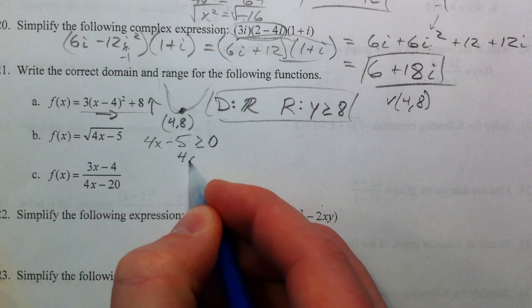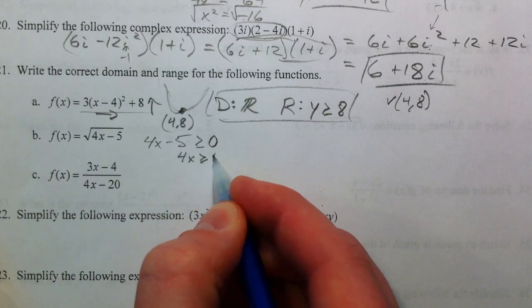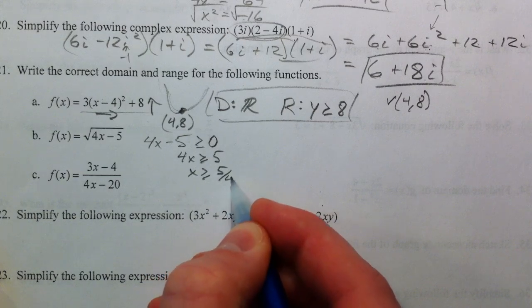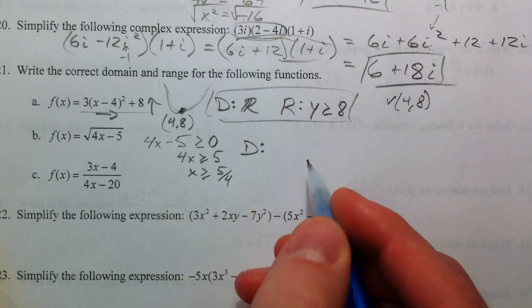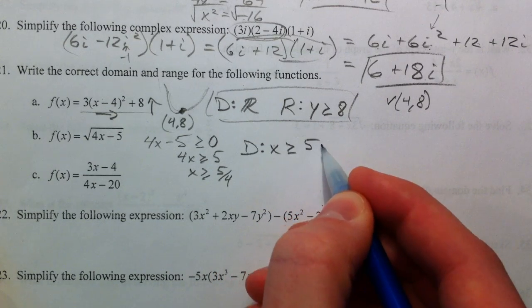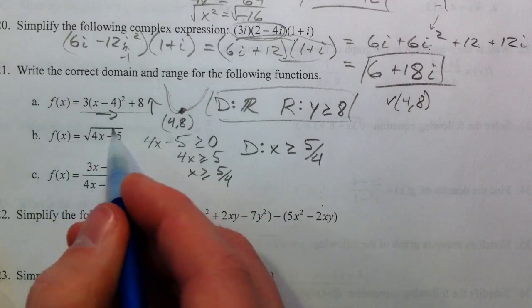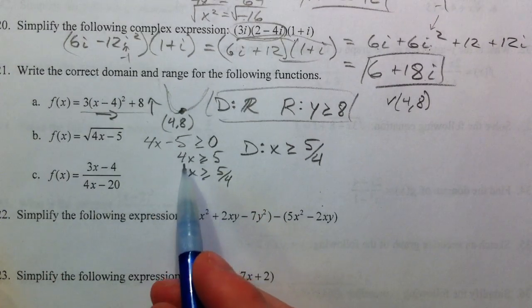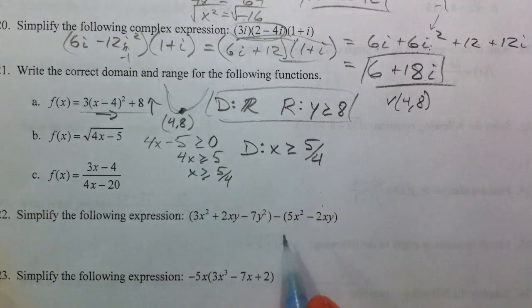Add the 5, you get 4x is greater than or equal to 5, x has to be greater than or equal to 5 fourths. That's what the domain is. x is greater than or equal to 5 fourths. And you're going to set what's underneath the radical equal or greater than or equal to 0 every single time, because you want it to be non-negative.